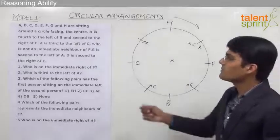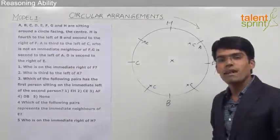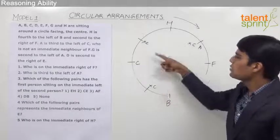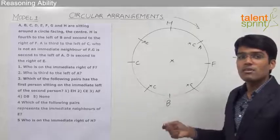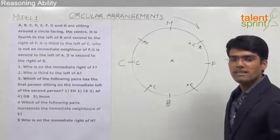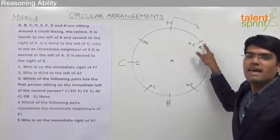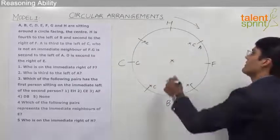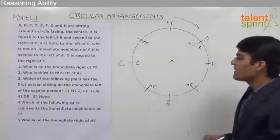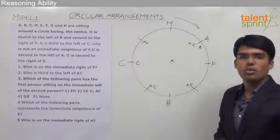From the statement 'A is third to the left of C, who is not an immediate neighbor of F,' we had three possibilities for C, but two have been cancelled. So the definite position for C is the second one. We can now fix C in that place, and since A is third to the left of C, A comes in its confirmed position. So far we have marked five persons on the table and three more are left.